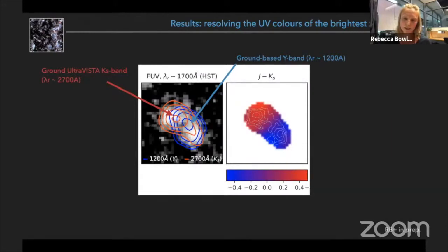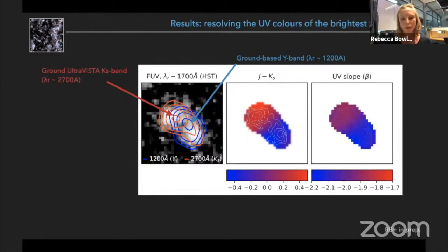So I went further and made a color map, and now you can clearly see that there's a color gradient across this source as observed in the PSF deconvolved ground-based data. I went further again and measured the UV slope from this multi-band data, and you can again see a gradient as you might expect in the ultraviolet slope.